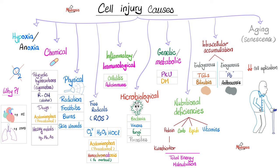Inflammatory conditions can injure my cells, such as abscess, furuncle, carbuncle, cellulitis, folliculitis, sepsis, etc. Immunological conditions like the famous autoimmune diseases: lupus, rheumatoid arthritis, scleroderma - also known as systemic sclerosis - Sjogren's syndrome, and much more.